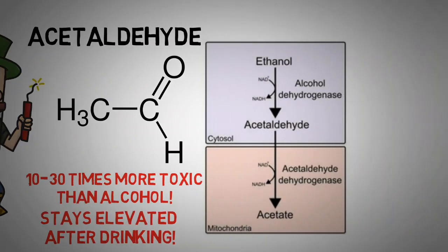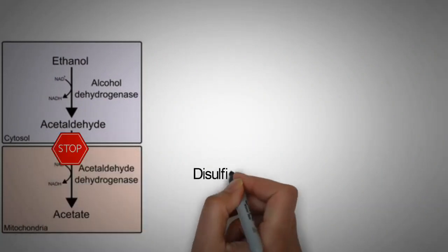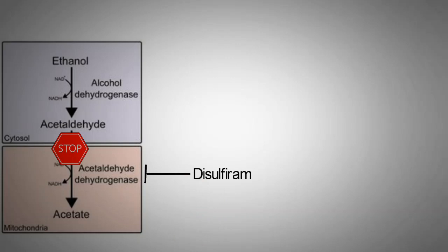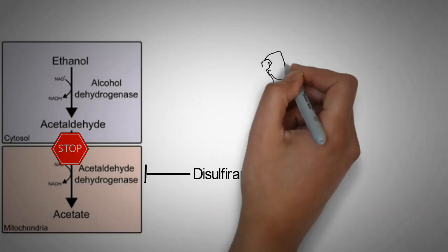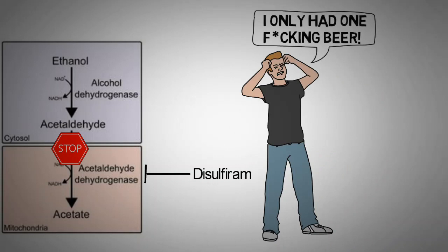One reason to think that acetaldehyde is causing the hangover is what happens when the breakdown of it is blocked. The drug called disophoram inhibits the breakdown of acetaldehyde by blocking the acetaldehyde dehydrogenase and causes a person to feel sick even after drinking small amounts of alcohol.